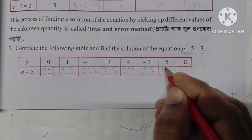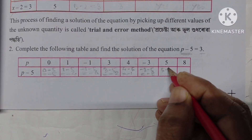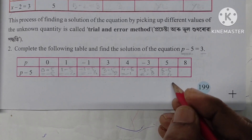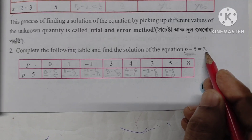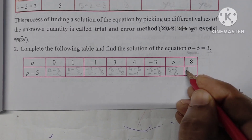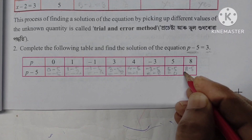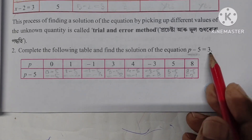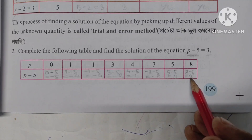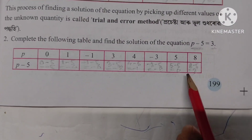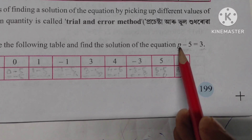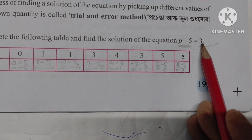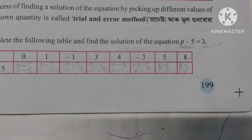For p equal to 5: 5 minus 5 equals 0, but right-hand side is 3, so not equal. For p equal to 8: 8 minus 5 equals 3. Left-hand side equals right-hand side — therefore the solution is p equal to 8.